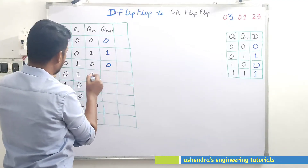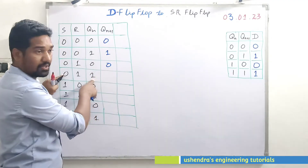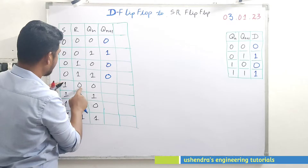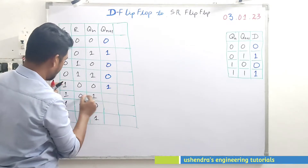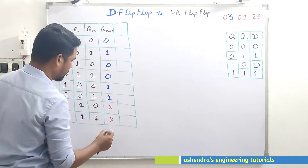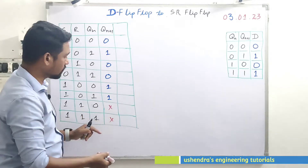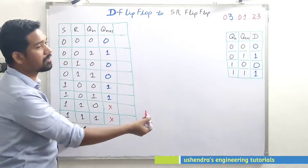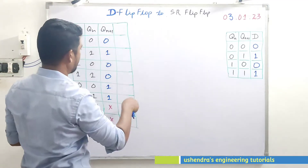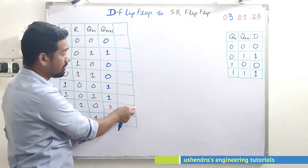Continuing the SR truth table: for the 0-1 combination it gives next states 0 and 1 continuing. If the present state is 1, it is forced to 0 — that's the reset condition. For 1-0 it's the set condition so the output is 1. For the 1-1 combination, since it's invalid the next state cannot be predicted, so we treat it as a don't care condition to minimize switching. That completes the truth table of the destination flip-flop.